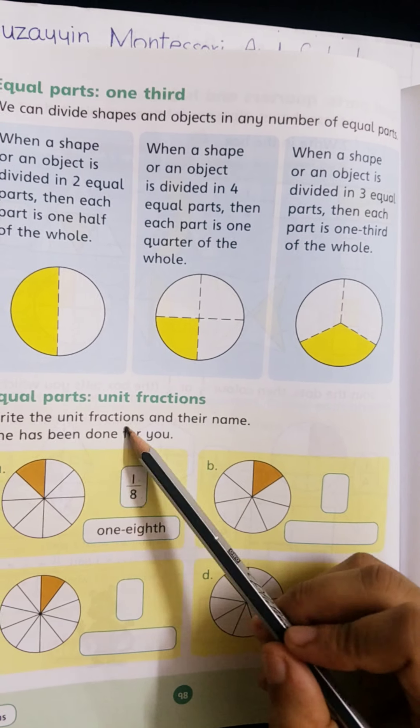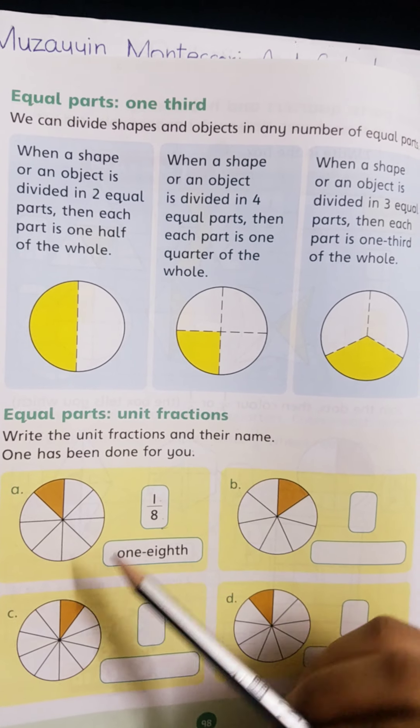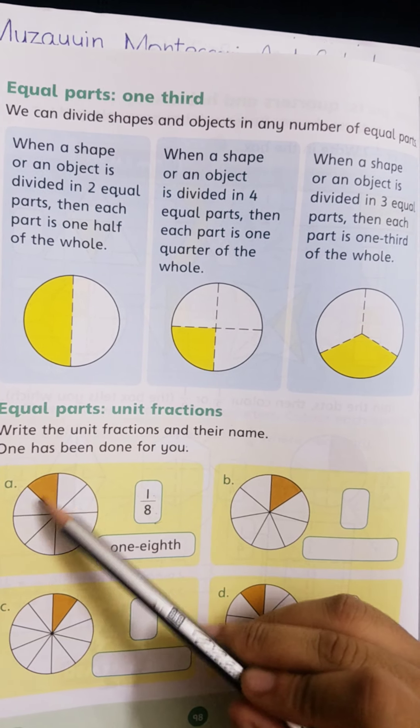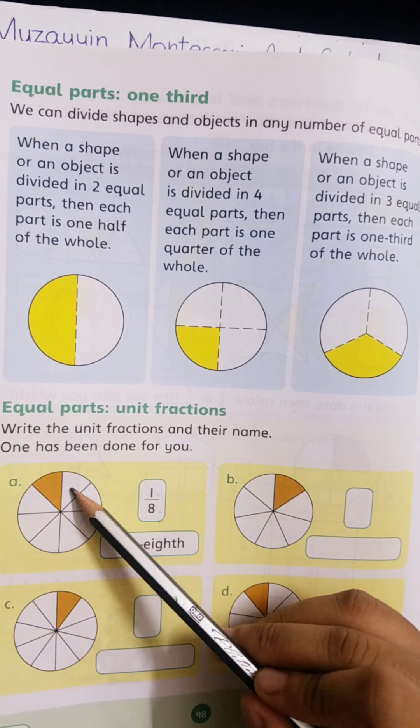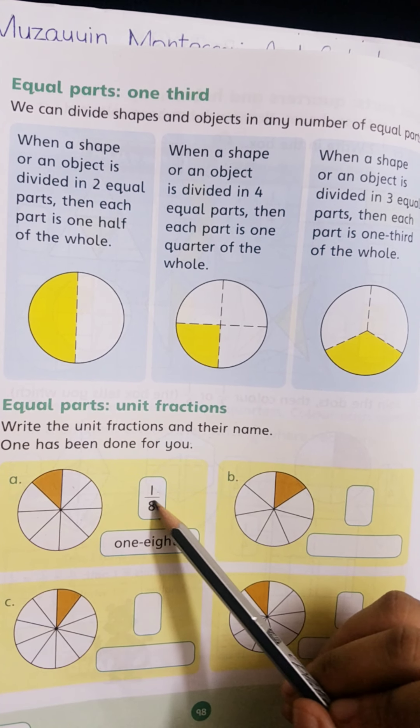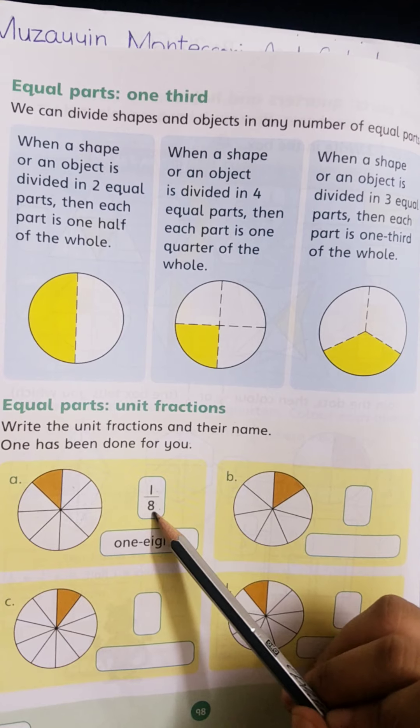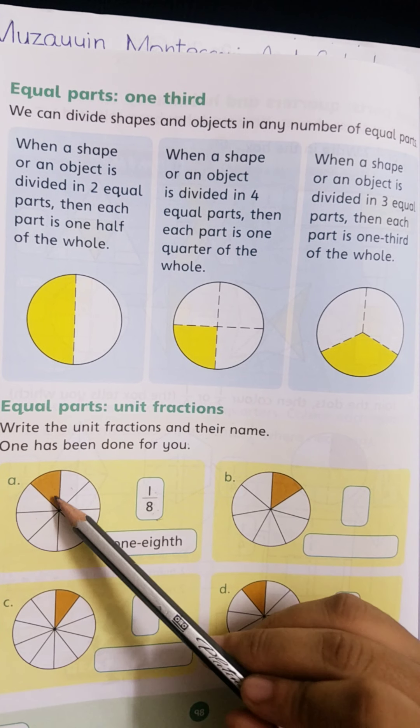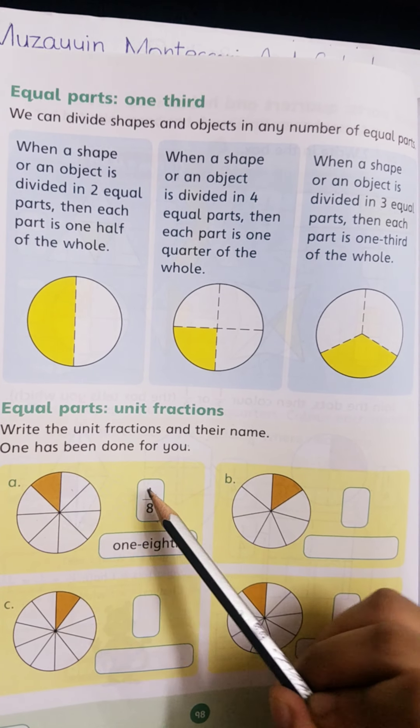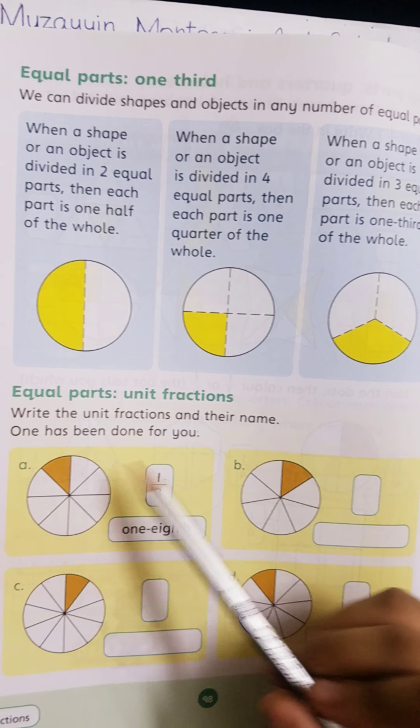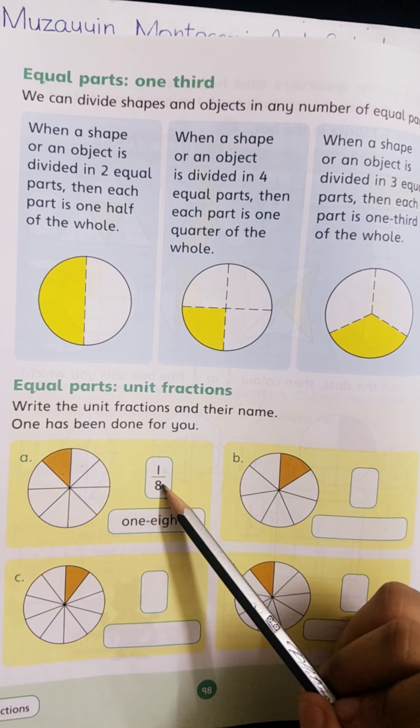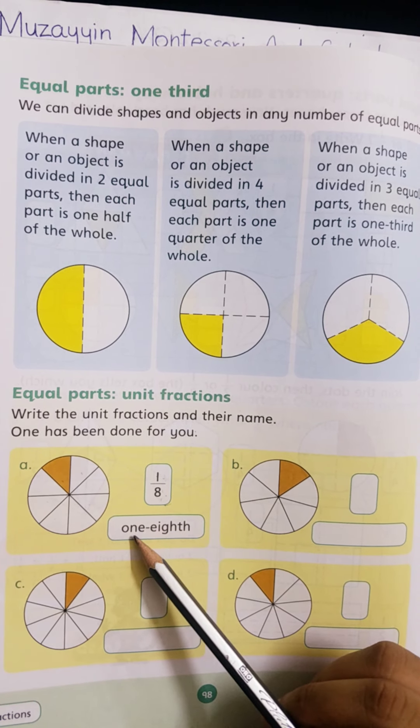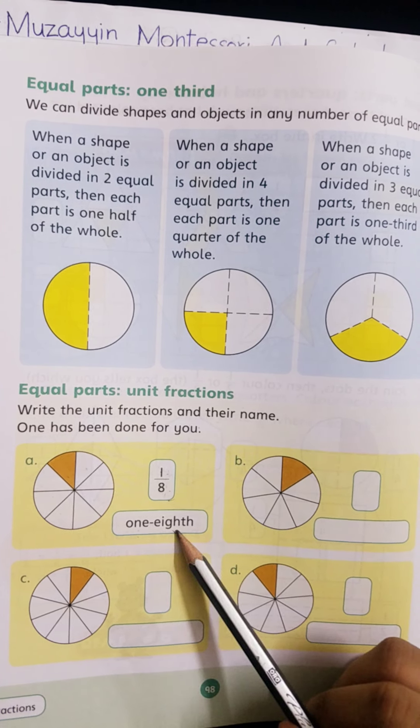Write the unit fractions and their names. In the unit fraction, how many parts? 1, 2, 3, 4, 5, 6, 7, 8. Total are 8 parts. Total number of parts we write down and colored parts we write up. 1 is colored, 1 by 8. 1 by 8 is also called one-eighth.